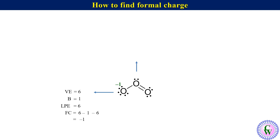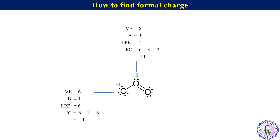Formal charge on the middle oxygen: Ve = 6. There are 3 covalent bonds around this oxygen, so B = 3. There are 2 electrons as lone pair, so Lpe = 2. Thus formal charge = 6 − 3 − 2 = +1.